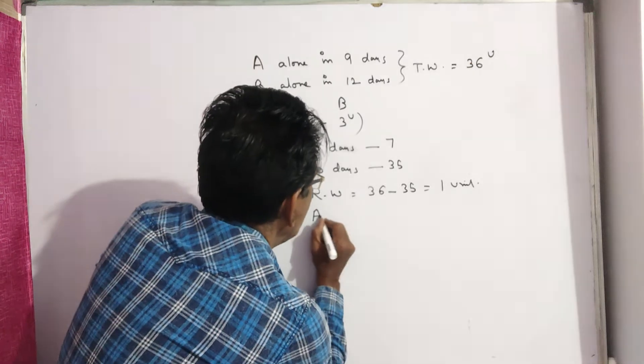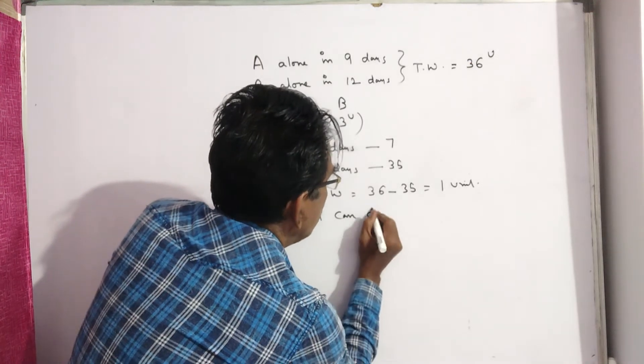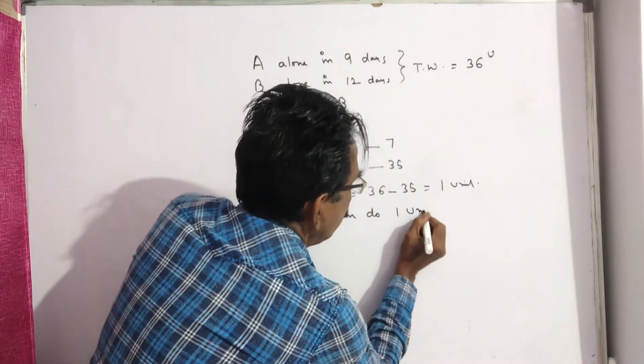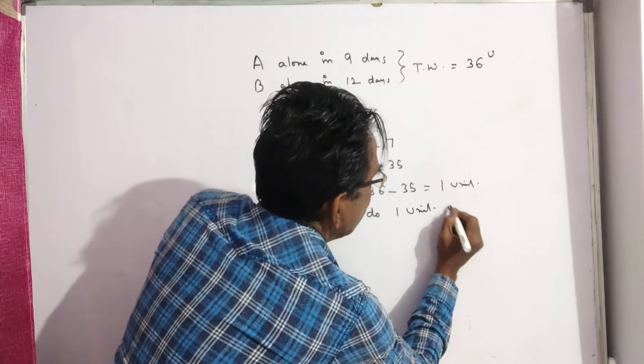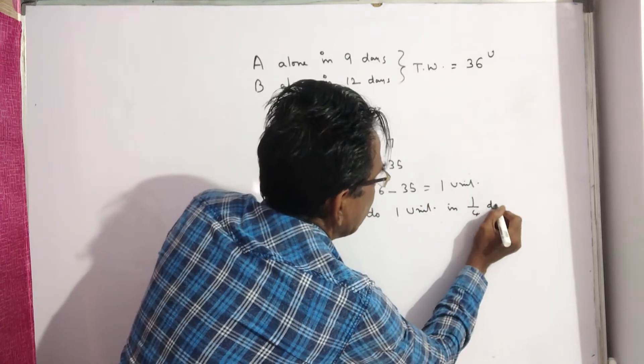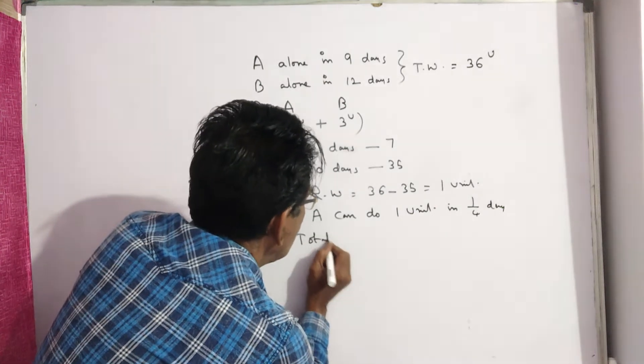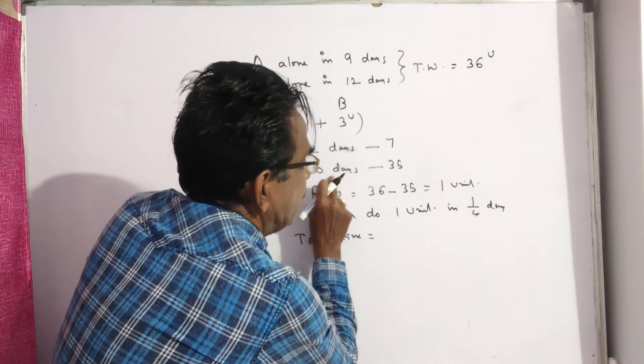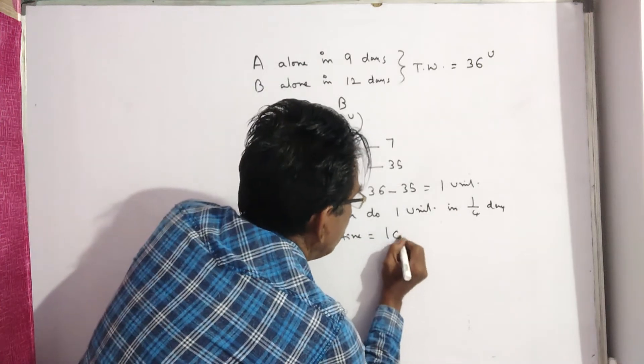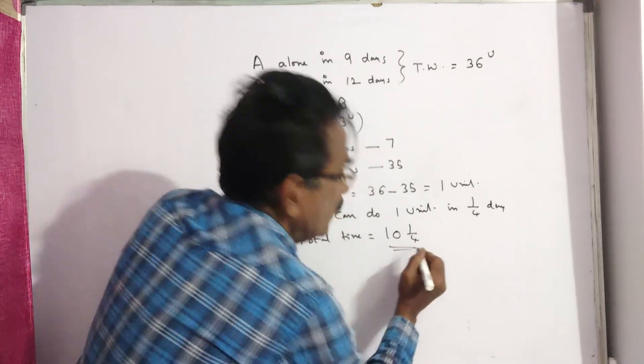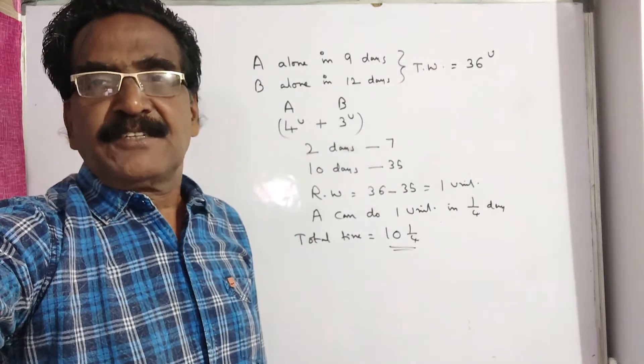A can do one unit of work in one-fourth day. So, the total time is equal to ten days plus one by four, 10 one by four days. Okay friends. Thank you. Have a nice day.